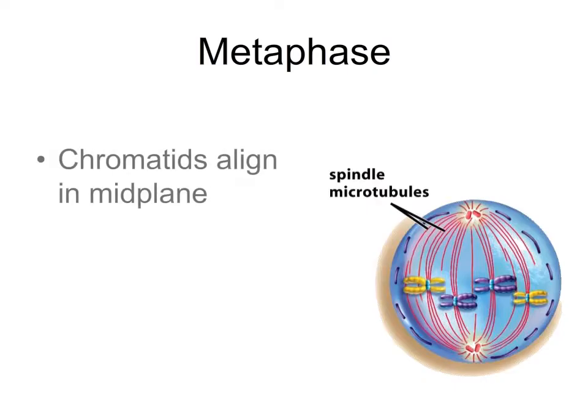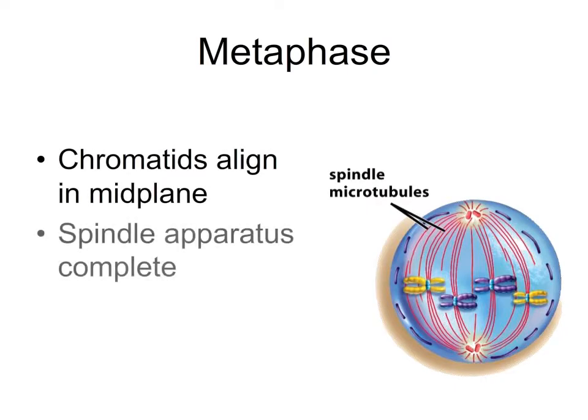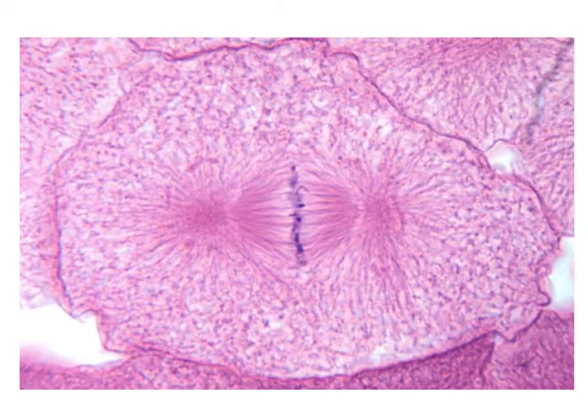In our next phase, metaphase, the spindle apparatus has completely formed as the sister chromatids are all attached to microtubules and line up in the midplane of the cell. Metaphase is a very obvious stage, as this micrograph shows the duplicated chromosomes clearly lined up in the center of the cell.